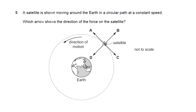Question 5: a satellite moves around Earth in a circular path at constant speed. The centripetal force acts toward the centre of the Earth. Applying this principle to the diagram, the answer is D.